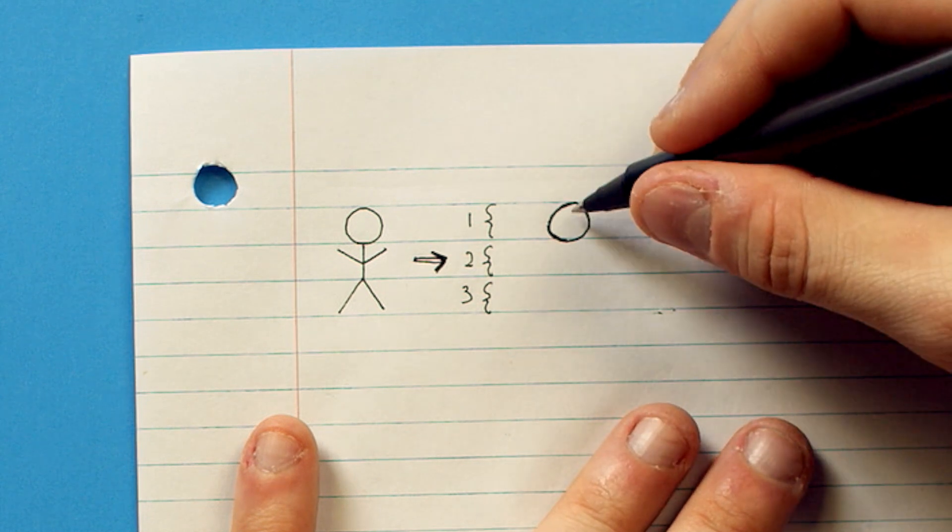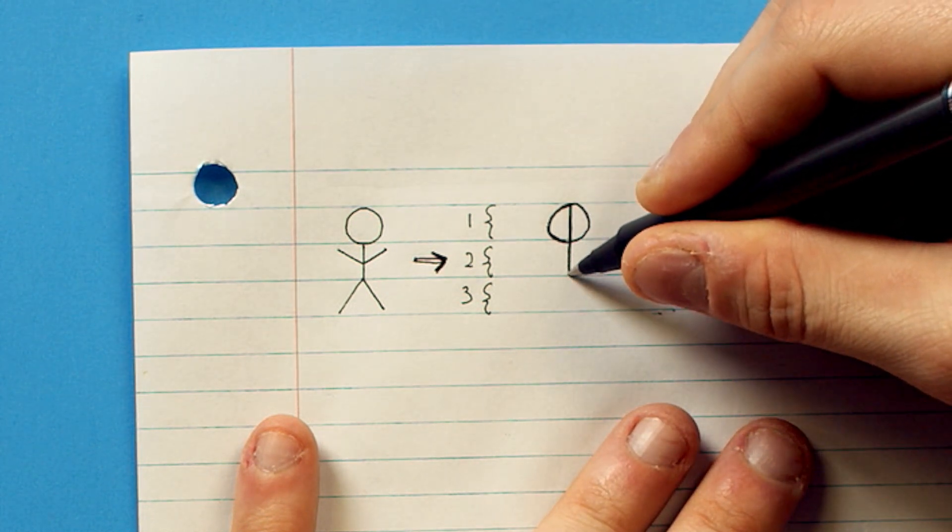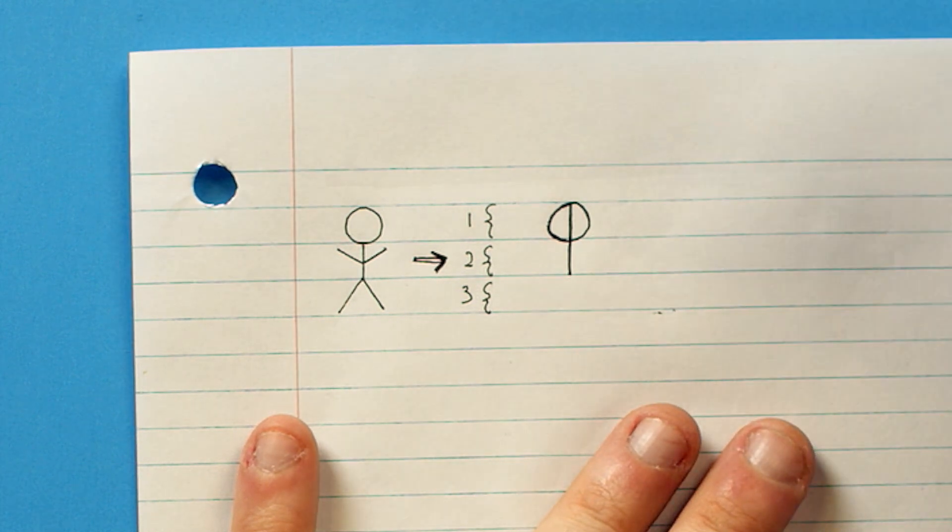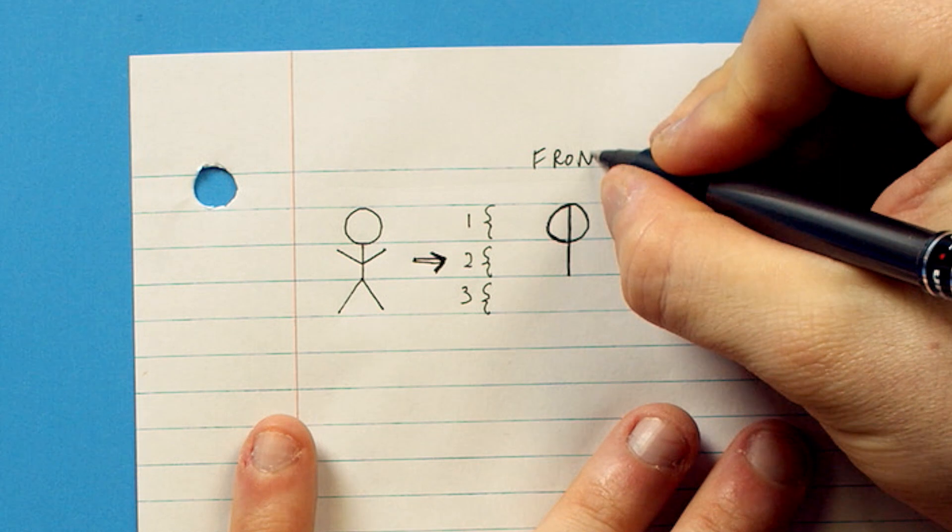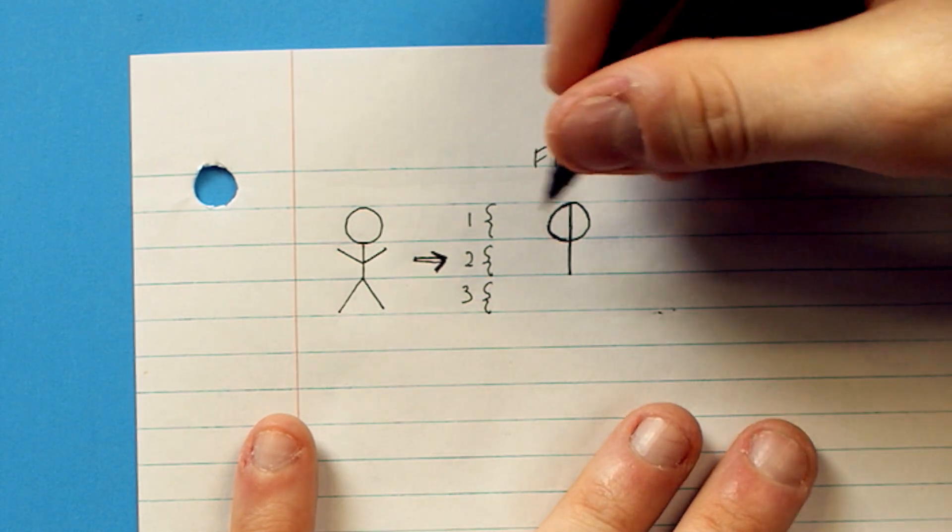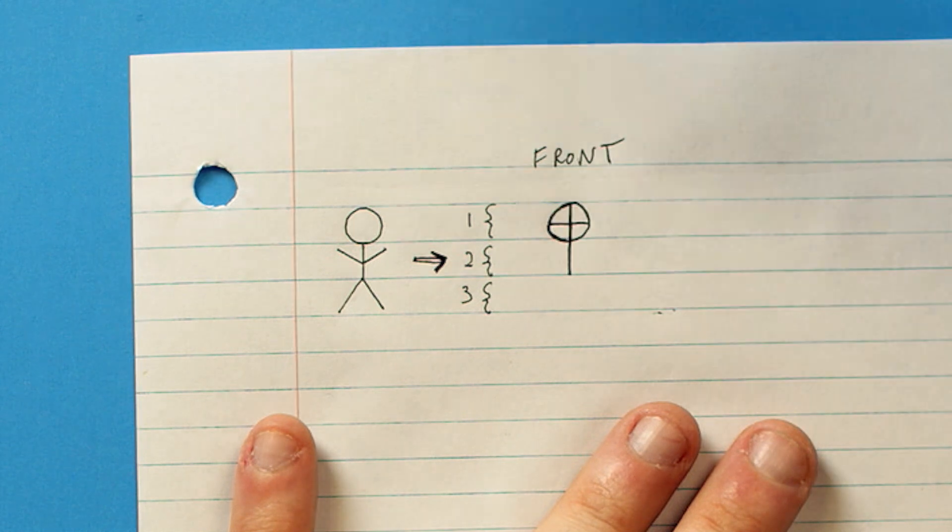So, the first thing you wanna do is draw that circle head and draw a line all the way down the center. That's your character's spine. This is the front view. Now divide that in half, and that's your character's eye line.